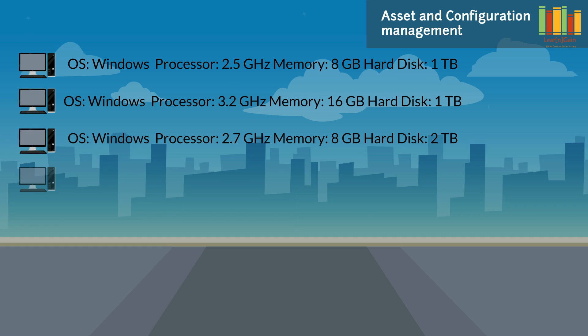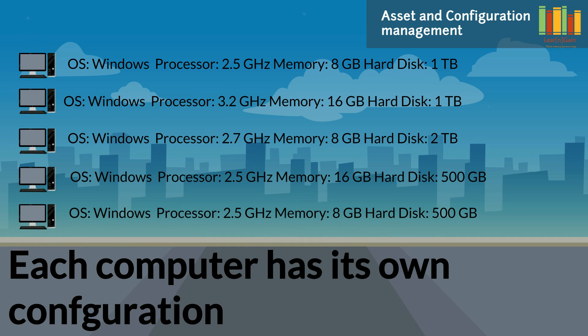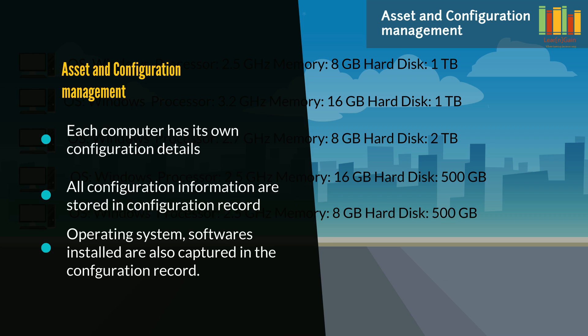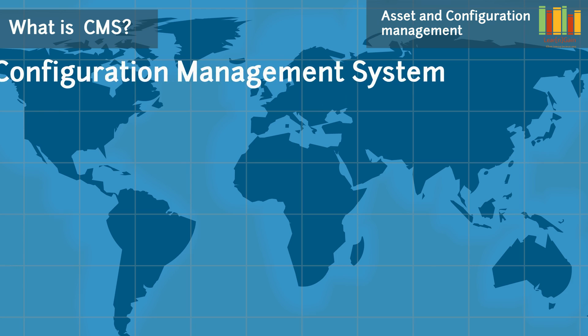Take an example of a set of computers. Each computer mentioned here has a unique configuration; some may have the same configuration but might be used for a different purpose. All the configuration details are stored in a configuration record. A configuration record has all hardware information like processor, memory, display card, and software information like operating system and software applications installed on the computer.